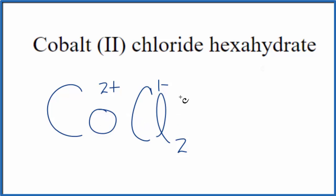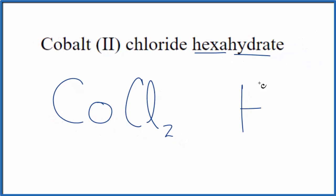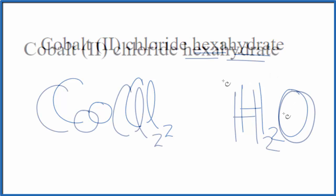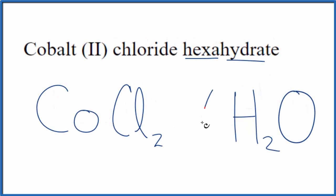This would be the anhydrous version. When we get to the hexahydrate, the hydrate tells us we have water. So we're going to write H2O. The hexa, that means we have 6 of these water molecules. And to show that the water molecules are around the cobalt chloride, we put this dot between them. So our formula for cobalt chloride hexahydrate ends up being CoCl2 with this dot 6H2O.